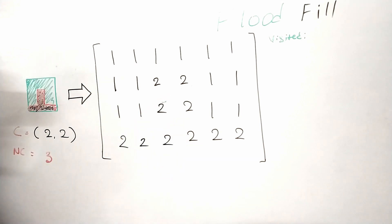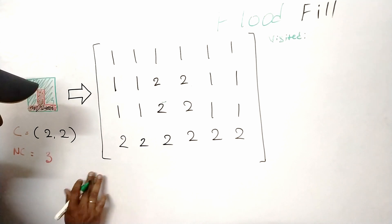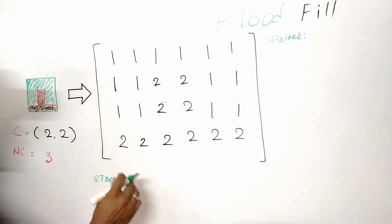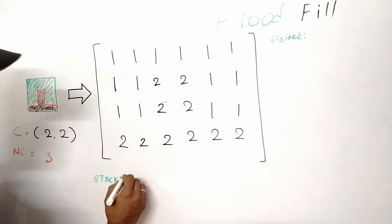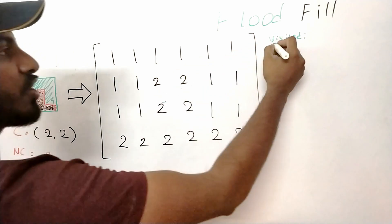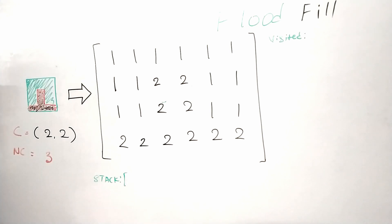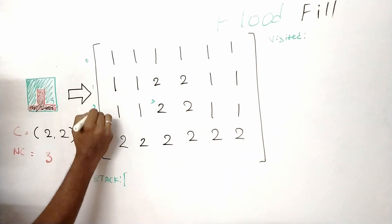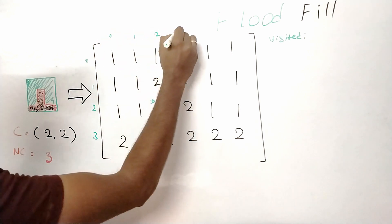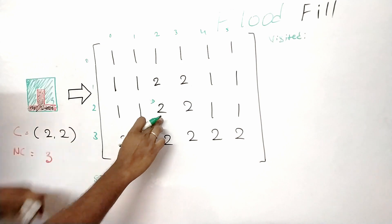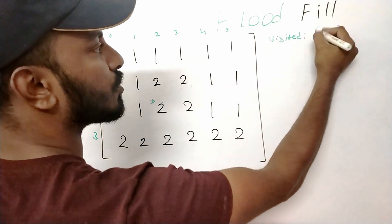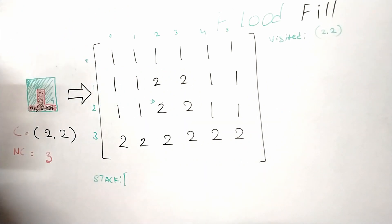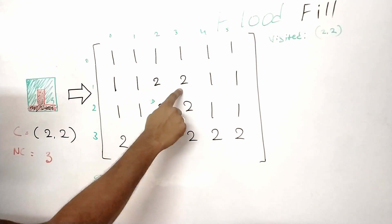We go to the clicked position, that is two comma two. To implement DFS, we maintain a stack and a variable called visited, where all visited nodes are added. From the clicked position, we first add it to the visited list — that is coordinate two comma two. Then we figure out all valid neighbors. The neighbors are the cells up, down, left, right, and diagonally surrounding the current cell.